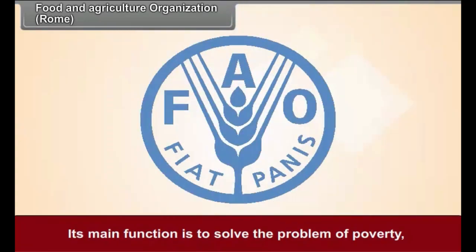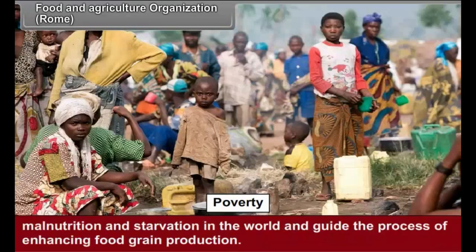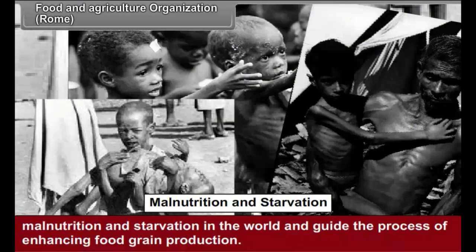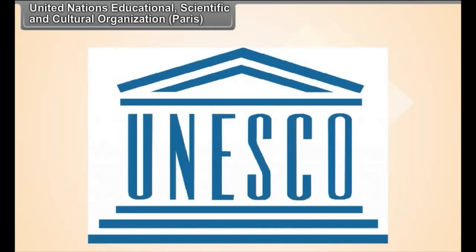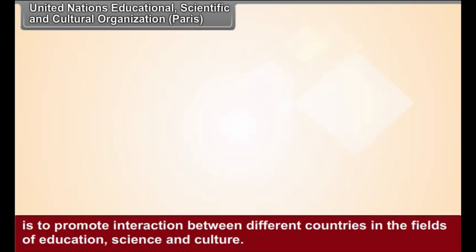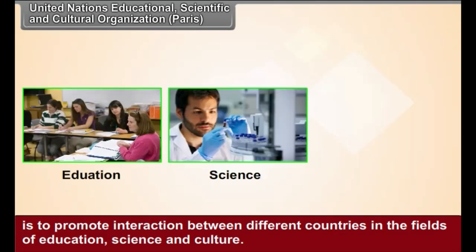Food and Agricultural Organization, Rome: Its main function is to solve the problem of poverty, malnutrition, and starvation in the world and guide the process of enhancing food grain production. United Nations Educational, Scientific and Cultural Organization, Paris: The main function of this organization is to promote interaction between different countries in the fields of education, science, and culture.